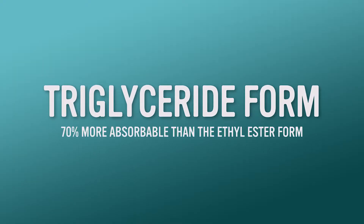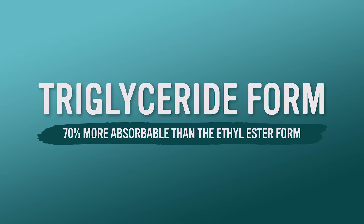If you're wondering about the form of omega-3 fat, research shows that the triglyceride form is much better absorbed by the body — we are accustomed to absorbing the triglyceride form and get much more bioactivity than from what's called the ethyl ester form. In fact, the triglyceride form of omega-3 fats is shown to be 70% more absorbable than the ethyl ester form, and it is more efficiently digested.